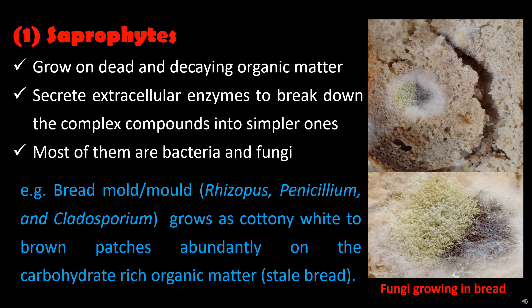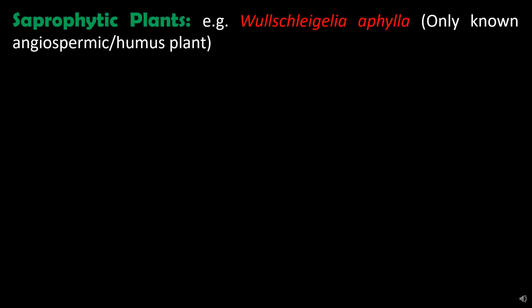Most common examples of these bread molds are Rhizopus, Penicillium and Cladosporium. Now, examples of saprophytic plants: only one saprophytic angiosperm is known, named Volsclegilia afyla, also called the humus plant because it is capable of absorbing nutrients directly from dead organic matter.